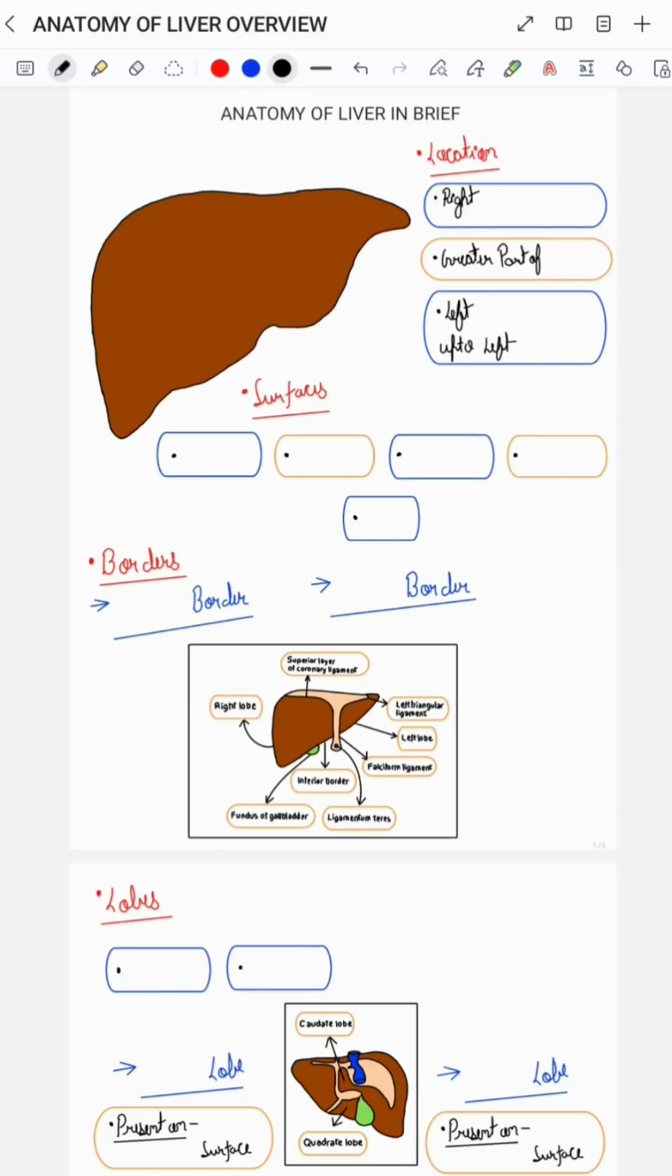In this short I will be giving an overview of the anatomy of liver. Liver occupies the right hypochondrium, greater part of the epigastrium, and the left hypochondrium up to the left lateral line.